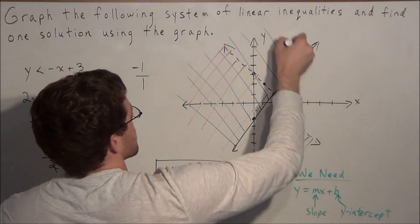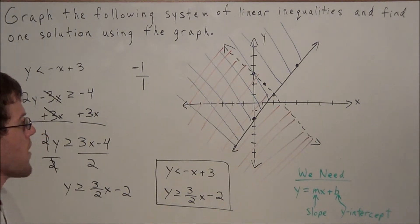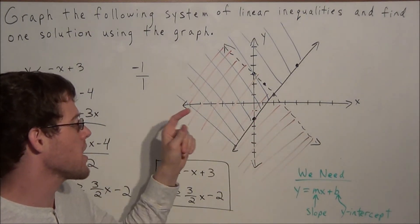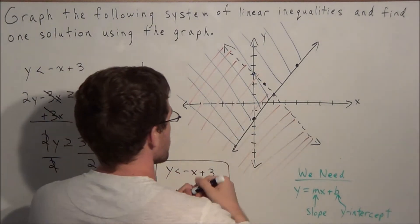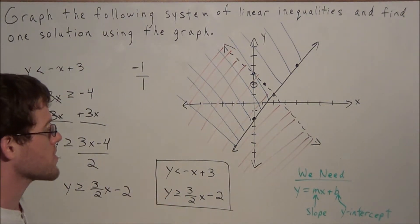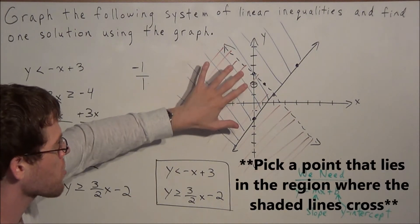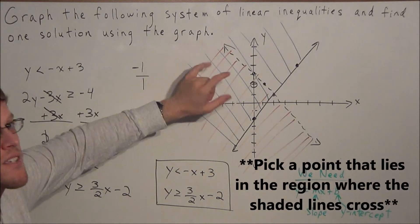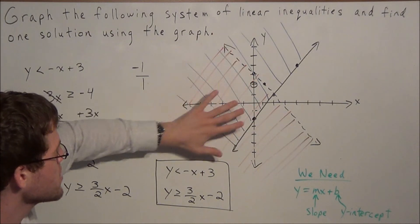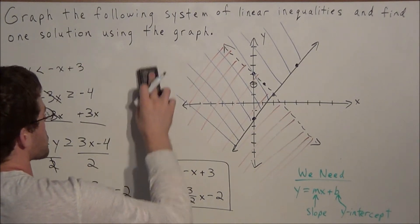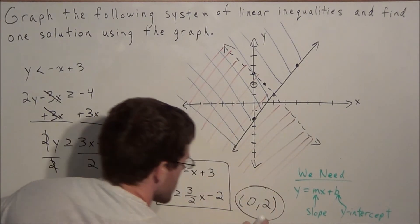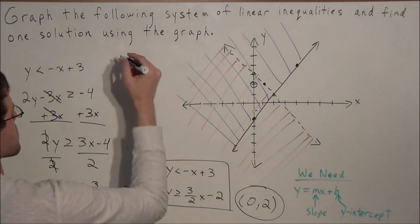Now we can answer the question: find one solution using the graph. I like to pick a point with a zero coordinate. I'll go with the point (0, 2). We need a point that's in both solutions — one that is in the region with two colors overlapping. So I'm going to claim that the point (0, 2) is a solution to this system of linear inequalities.